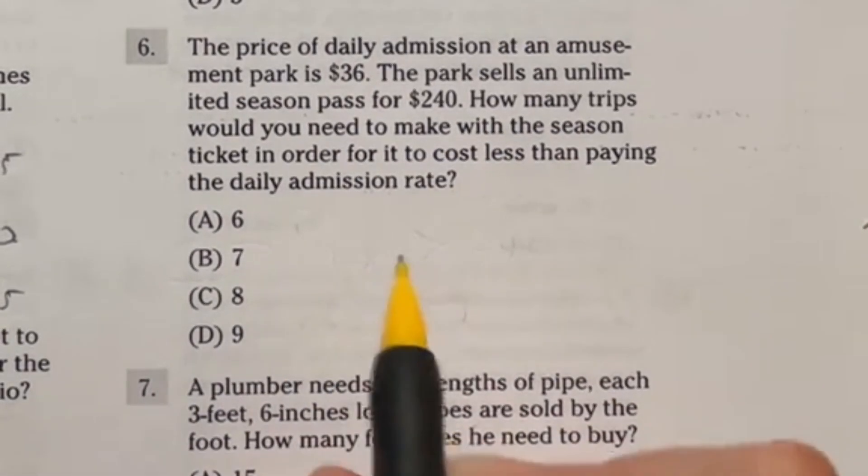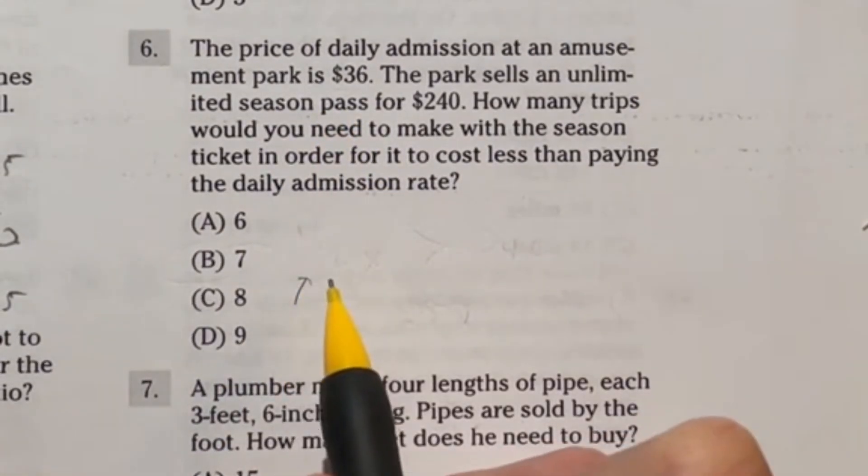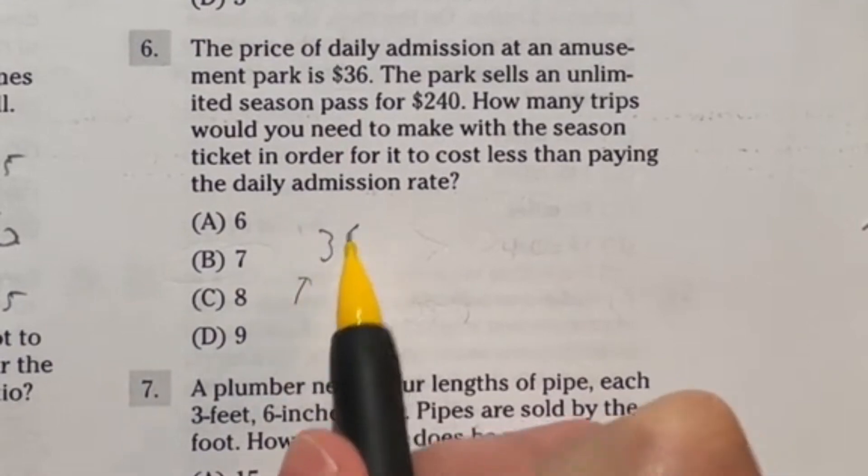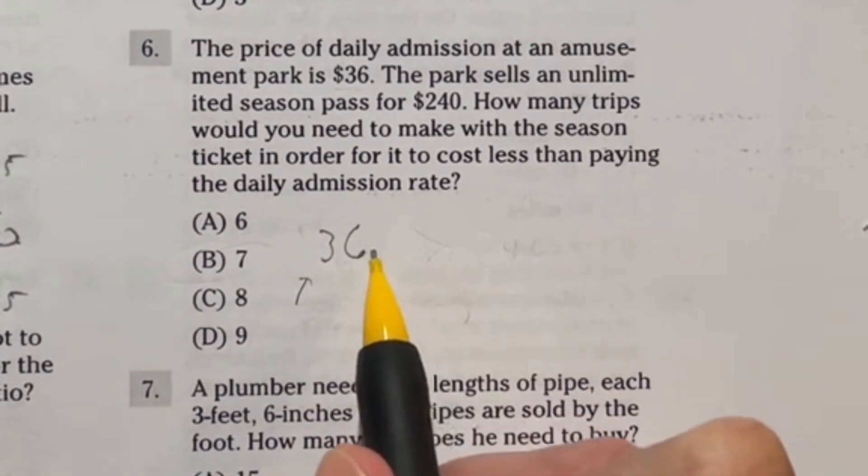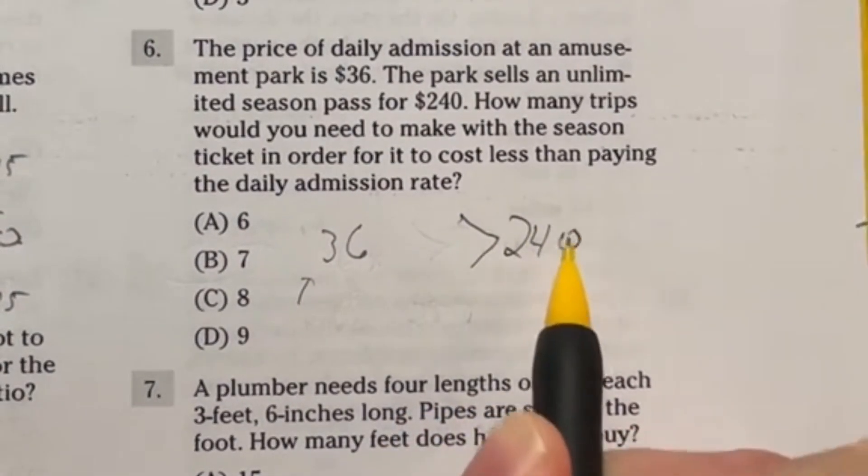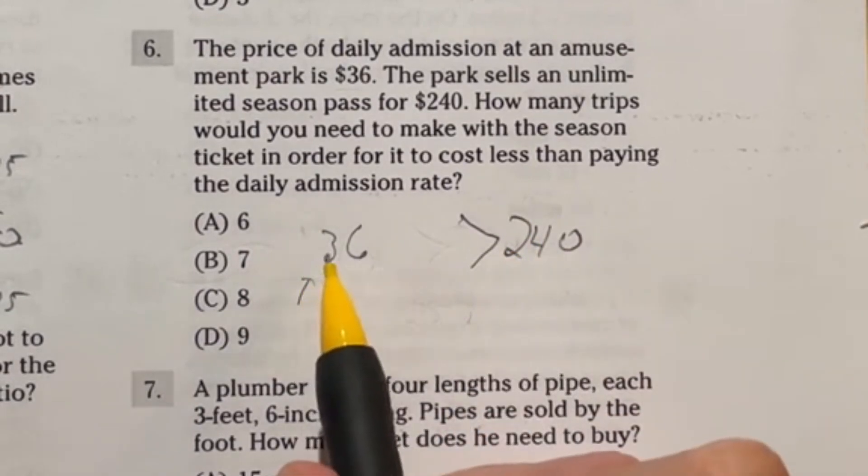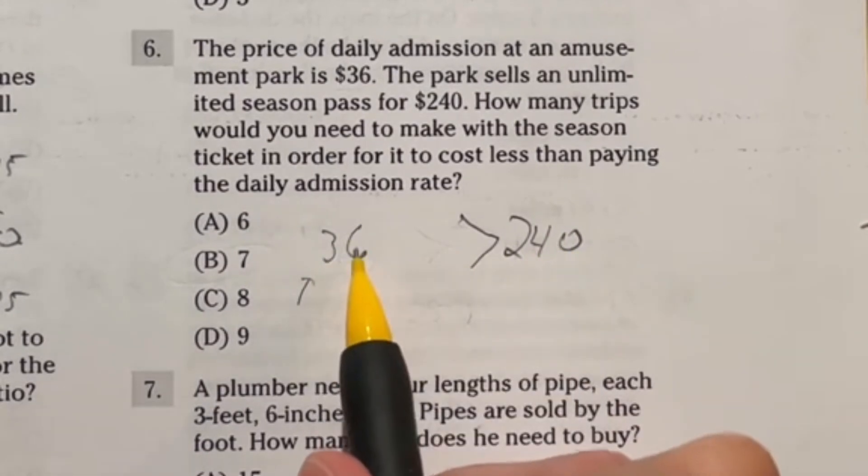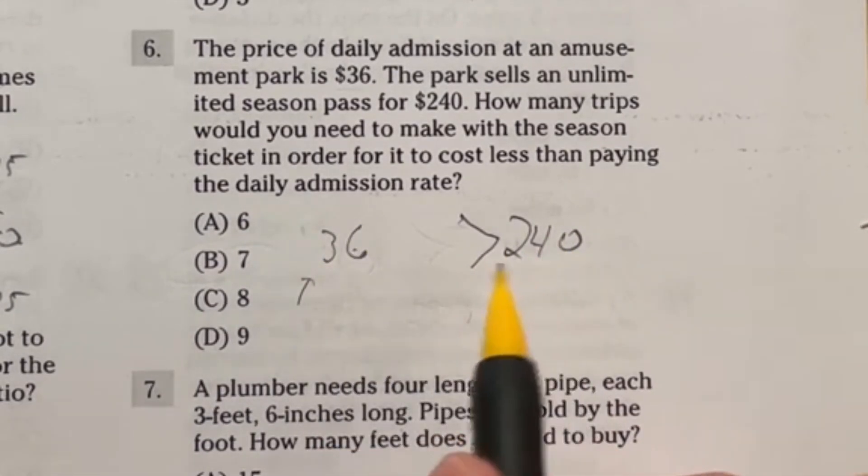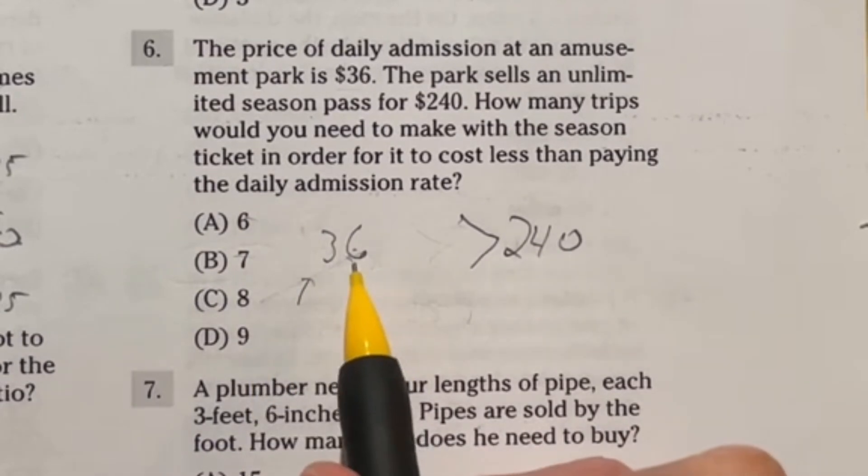So here's the deal. Every time I go to this amusement park, I'm going to be paying $36. At what point is it going to be larger than $240? Because that's the unlimited pass price. So I could take 240 and divide it by 36. But if you don't like doing division in your head like that, there's no calculator here. Let's just start plugging in these answers and see what we get.